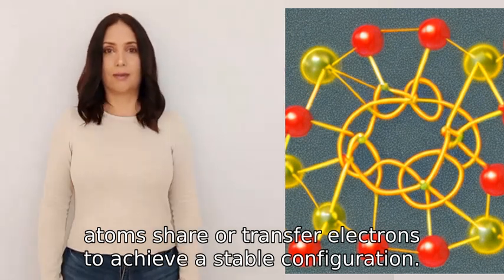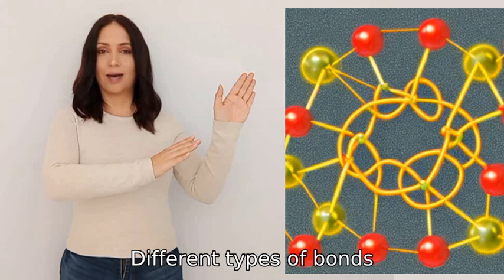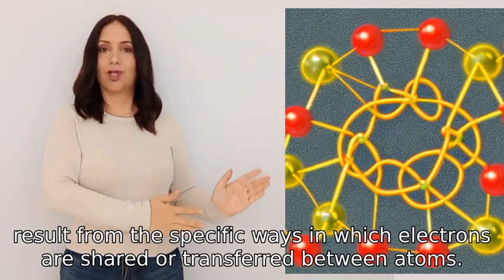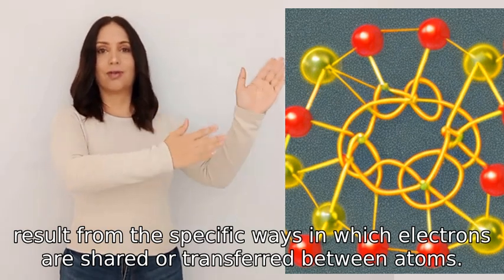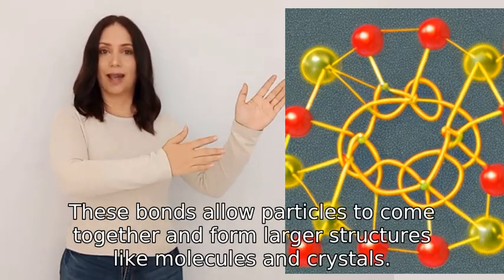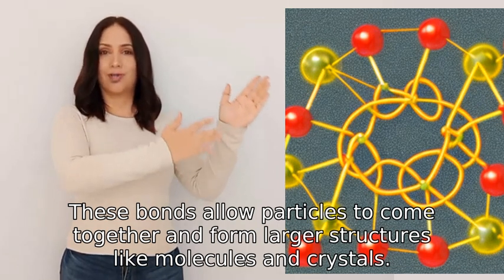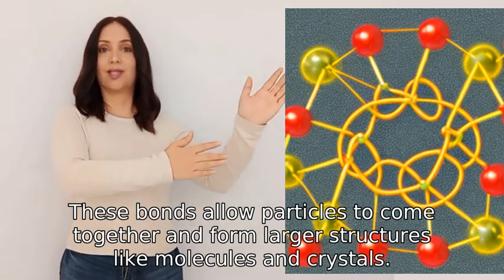Different types of bonds, such as covalent or ionic bonds, result from the specific ways in which electrons are shared or transferred between atoms. These bonds allow particles to come together and form larger structures like molecules and crystals.